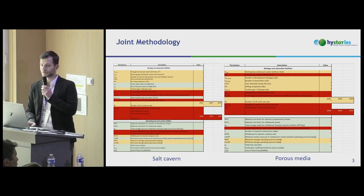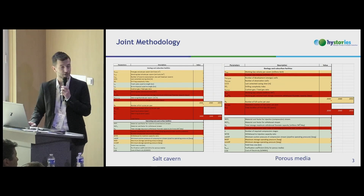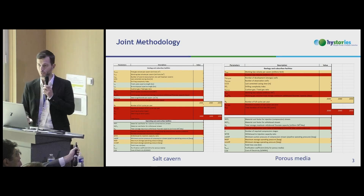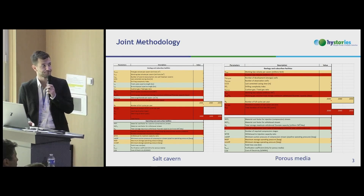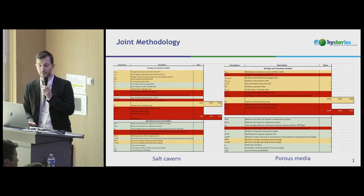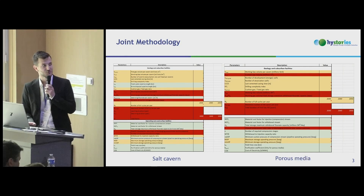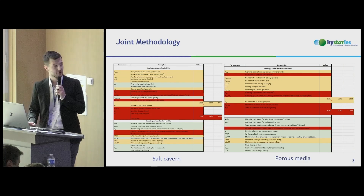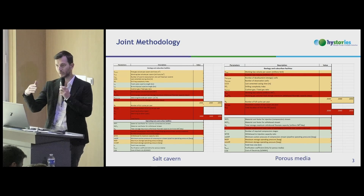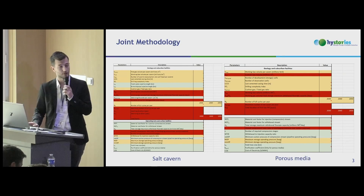You can see here different colors. Green represents all those parameters which the user can freely choose. Yellow is for those parameters which are better to fix with an expert opinion. And finally, the red parameters are all those computed directly from the cost model integrated in the tool.